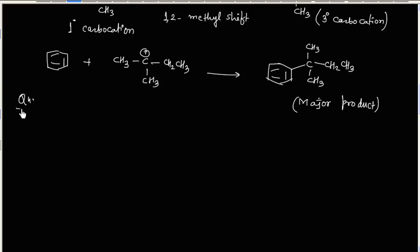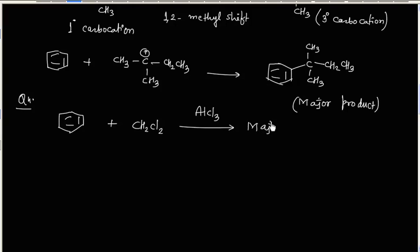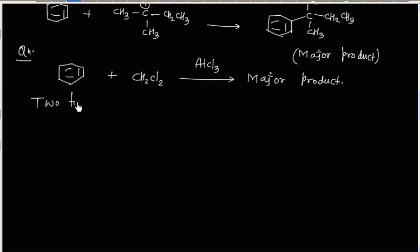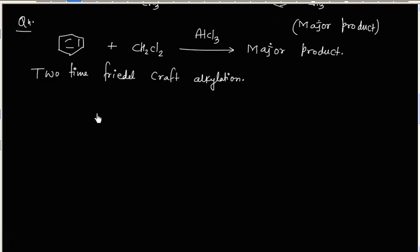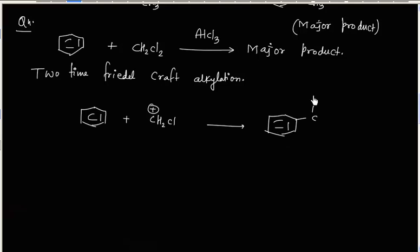Now, what will happen if benzene reacts with CH2Cl2 and the Lewis acid AlCl3? What will be the major product? In this case, we will have a 2-step Friedel-Craft alkylation. In the first step, CH2Cl⁺ acts as the electrophile and attacks the benzene ring to give an intermediate product.